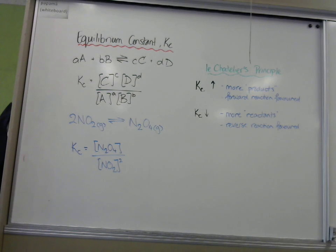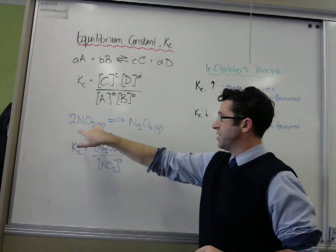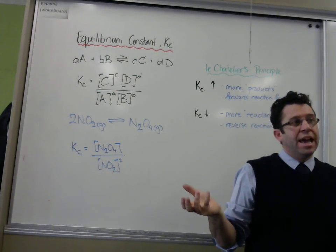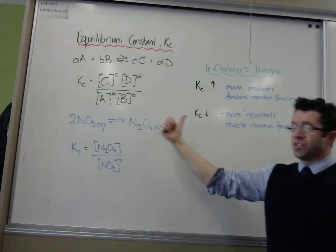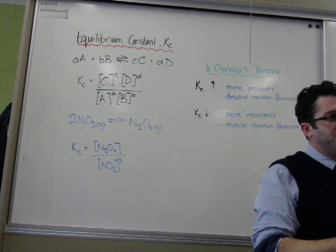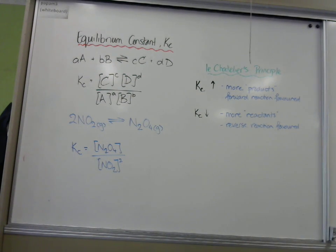The thing called the equilibrium constant helps us understand that equilibrium doesn't mean there's the same concentration of reactants as products. It's not an equal concentration. It's an equal rate of reaction for the forward and reverse reaction once the equilibrium has been established, once we have a dynamic equilibrium.